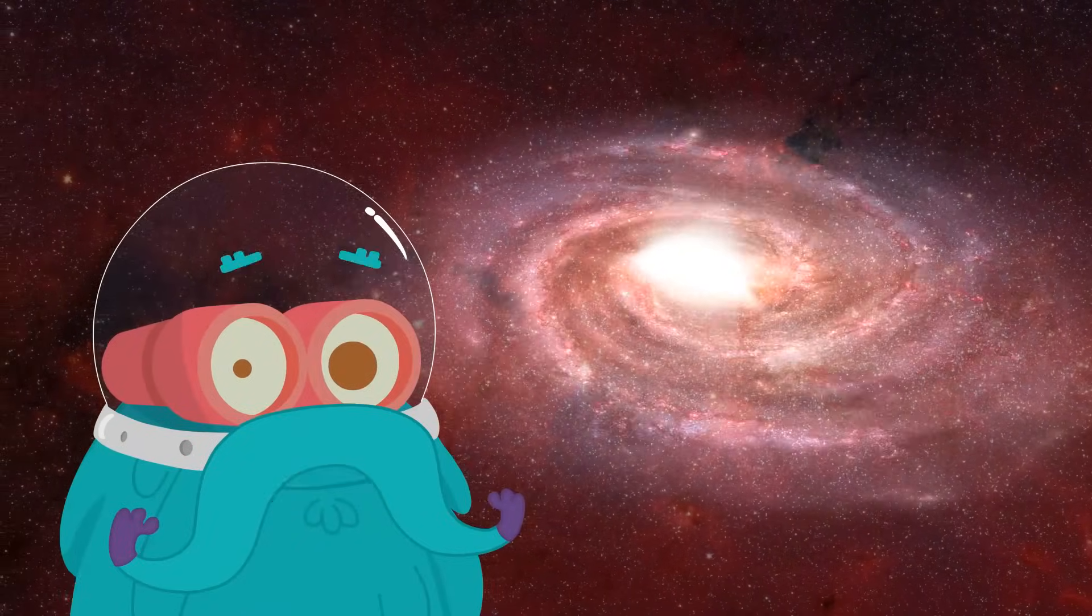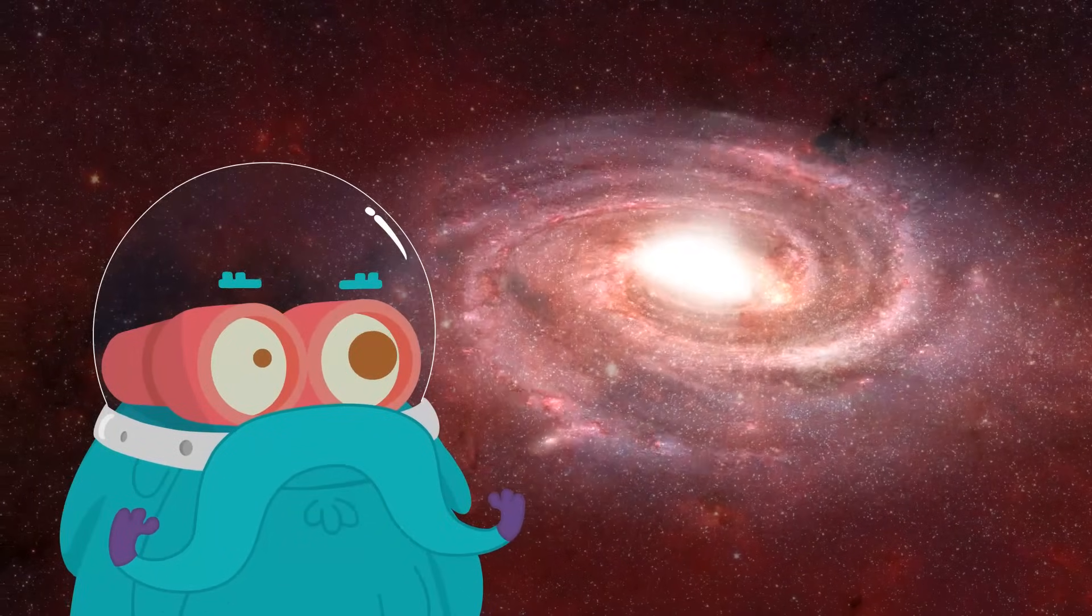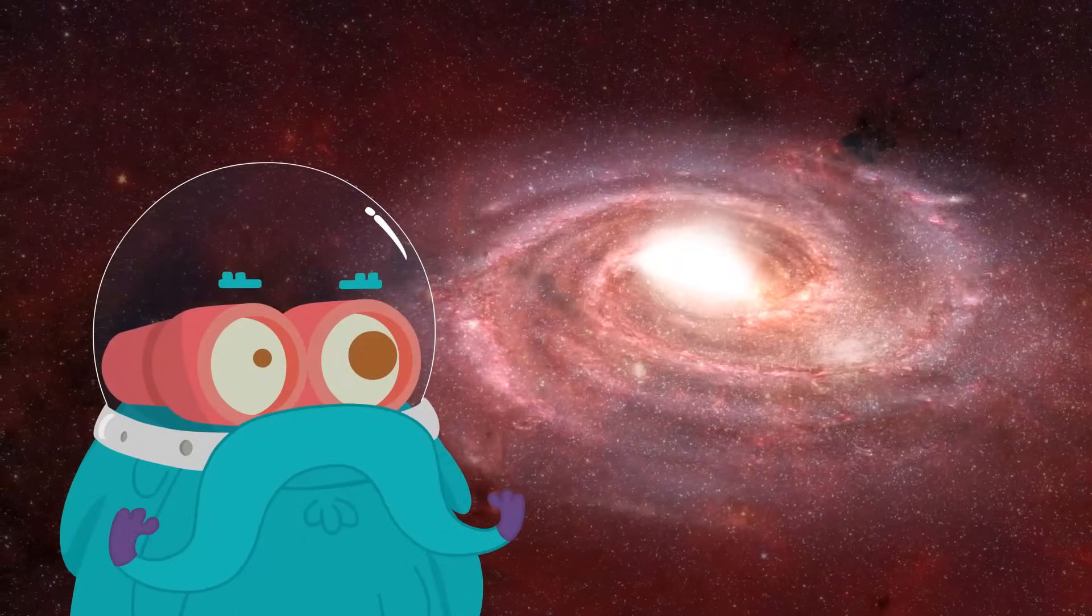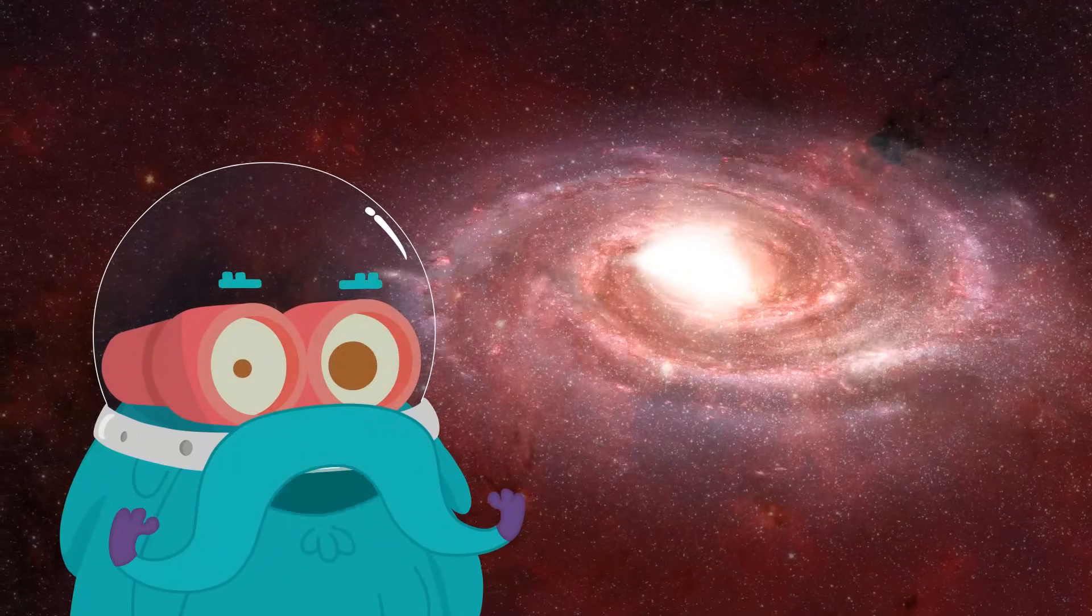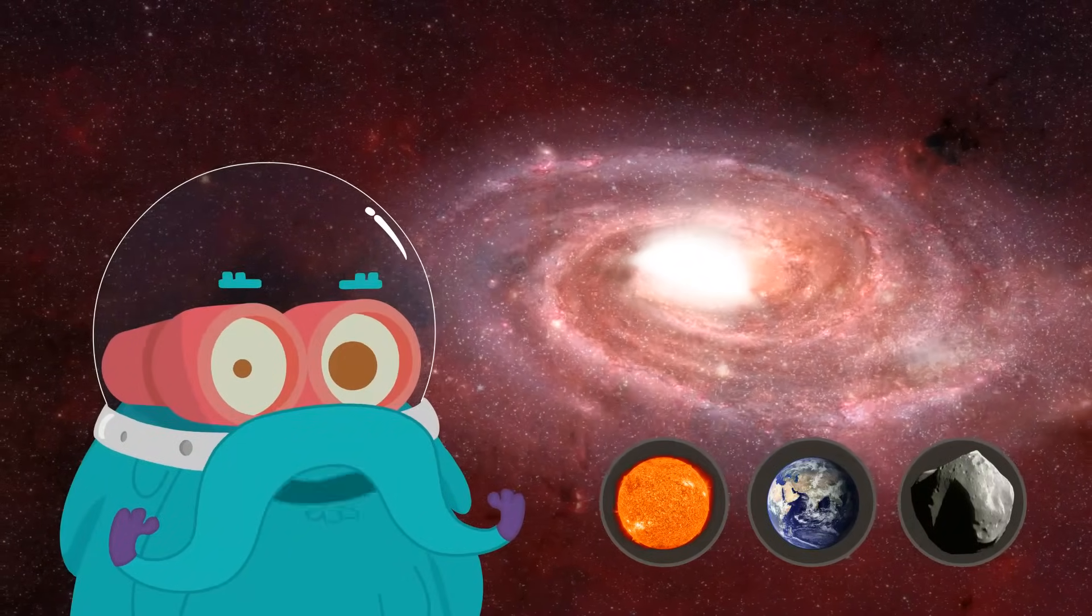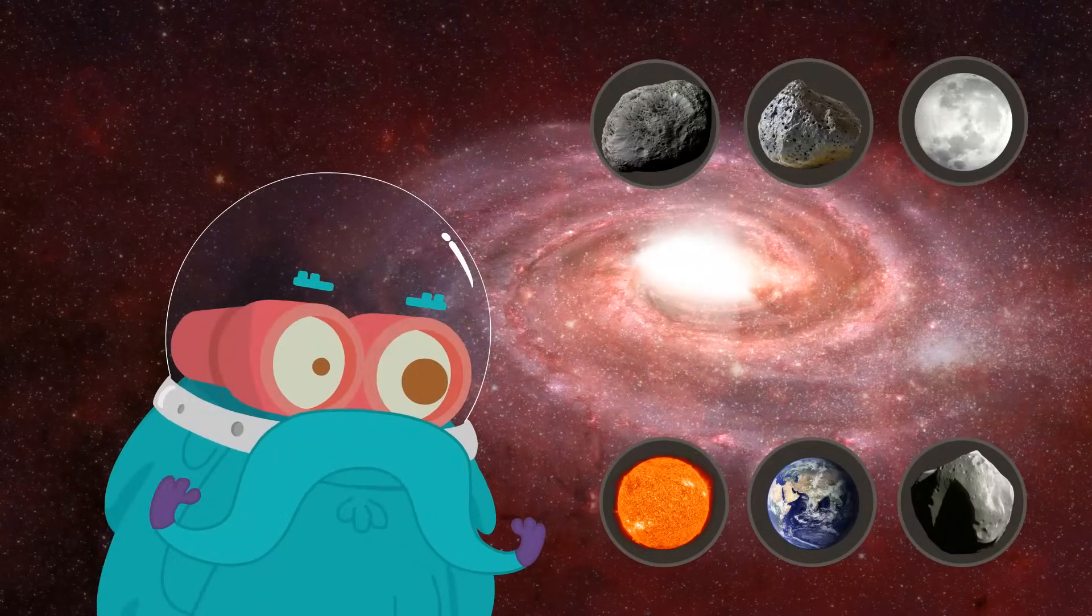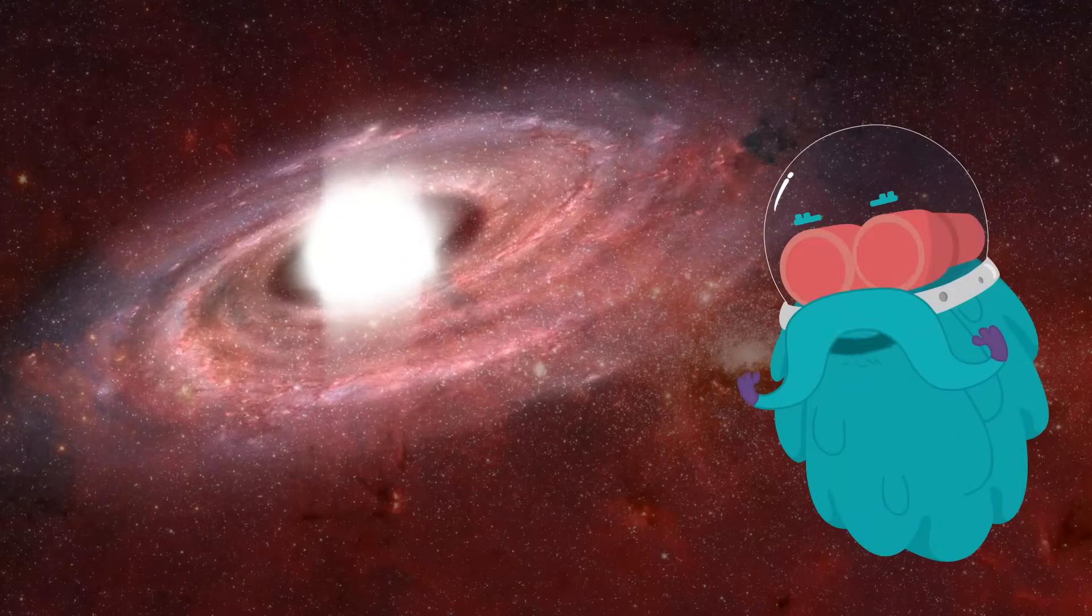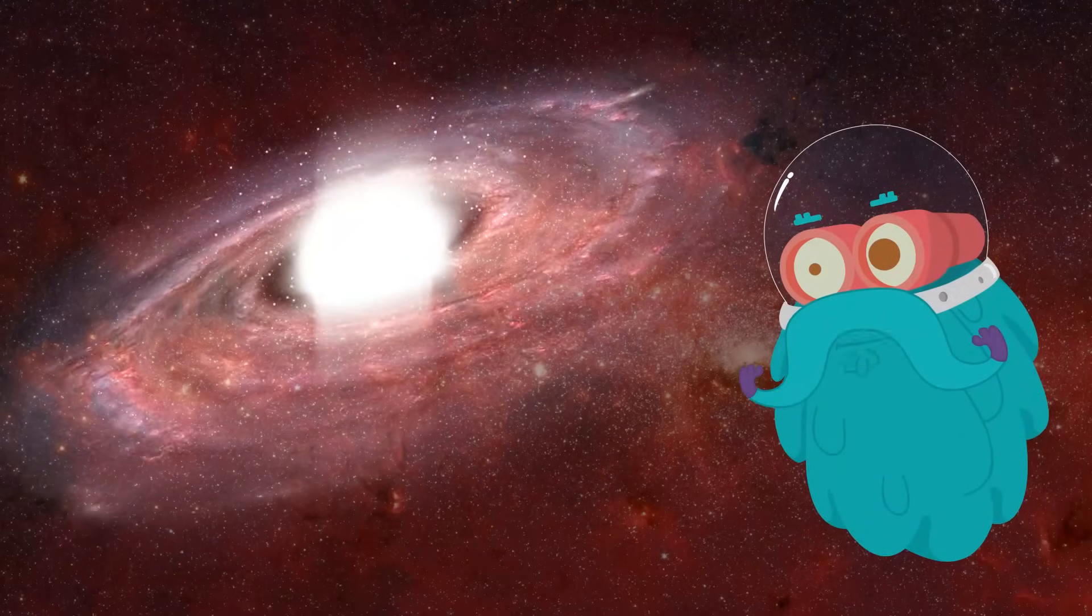Just for some extra information, a solar nebula is a large cloud of gas and dust from which the sun, planets and other solar system bodies like asteroids, meteors and moons were formed. Ok, so let's now continue from where we left off.